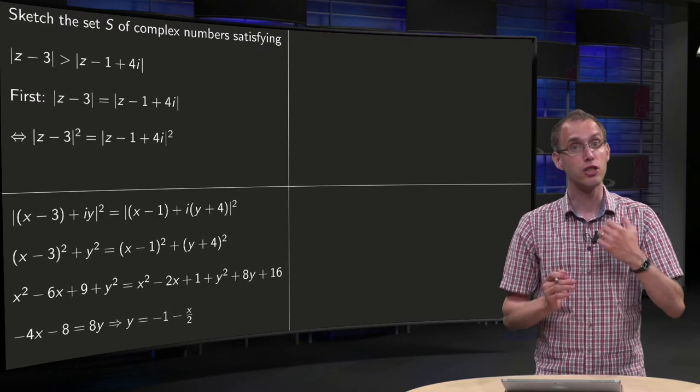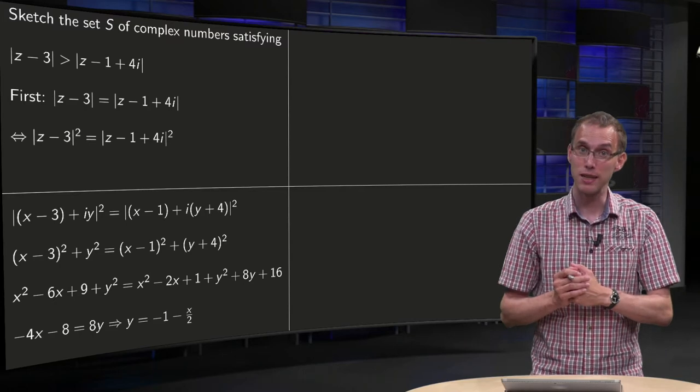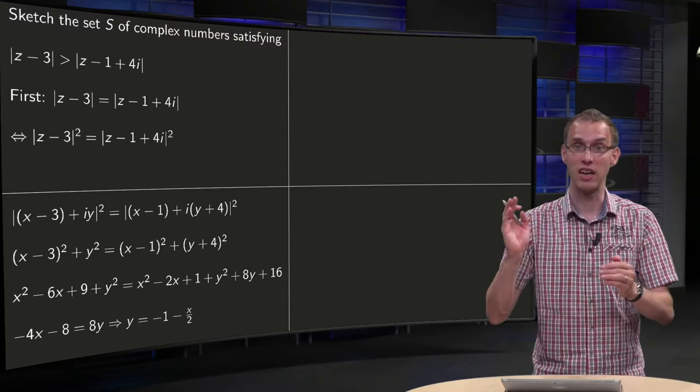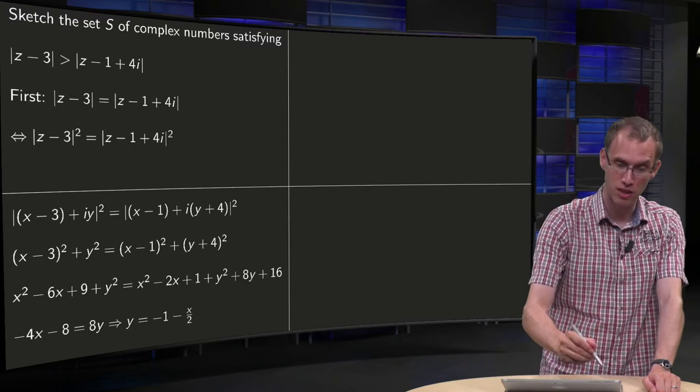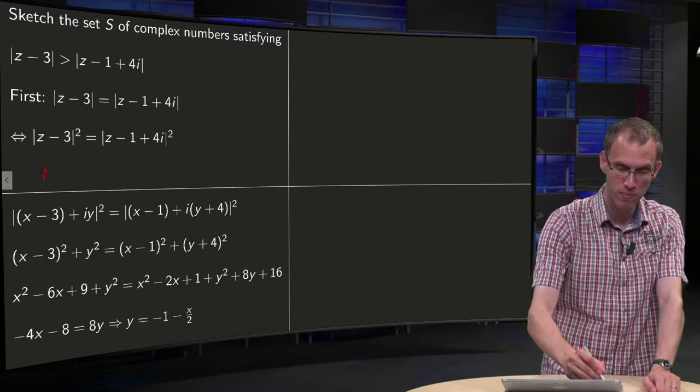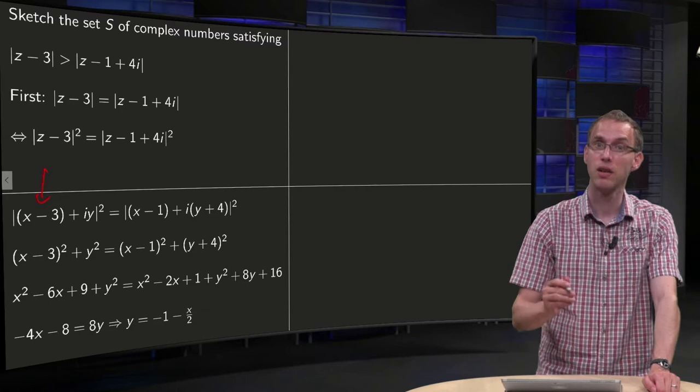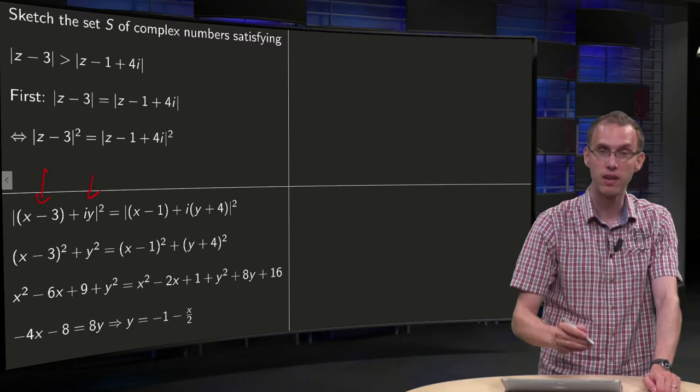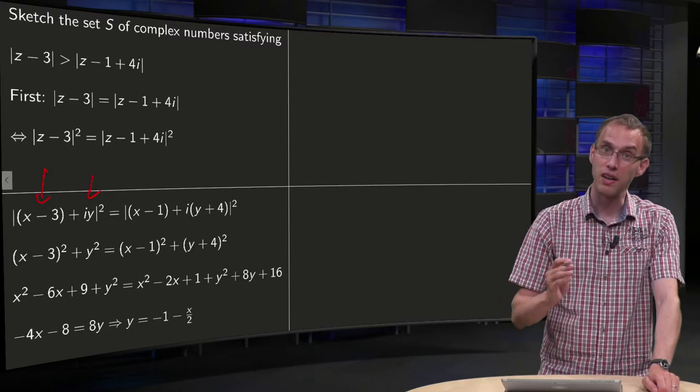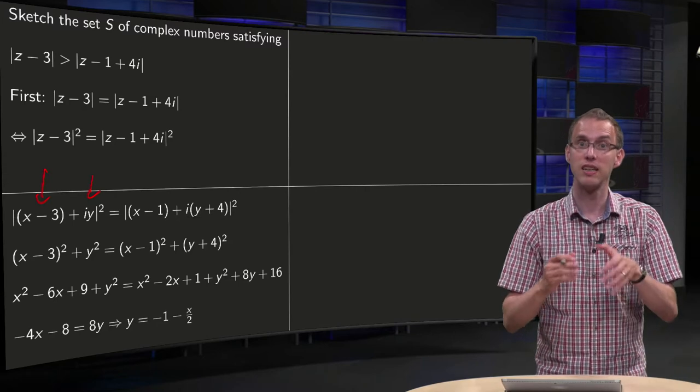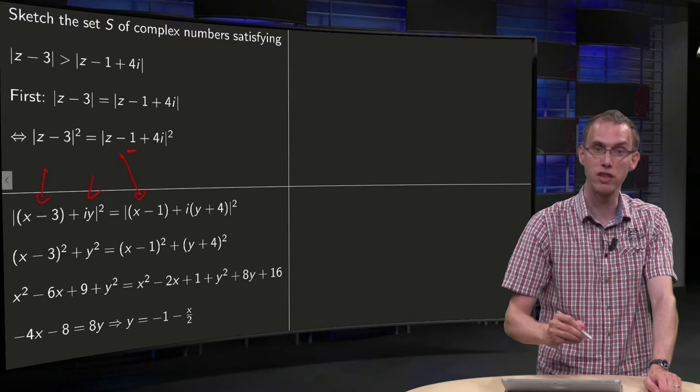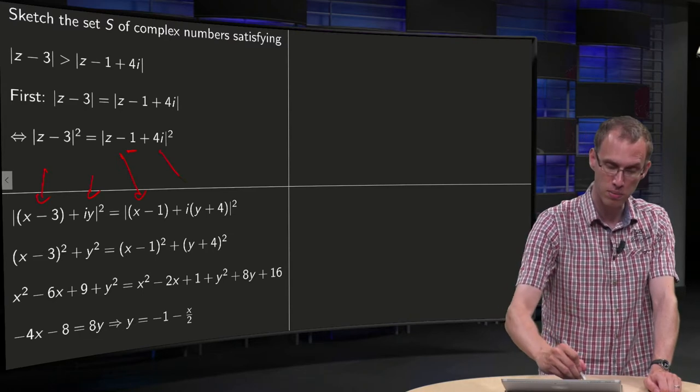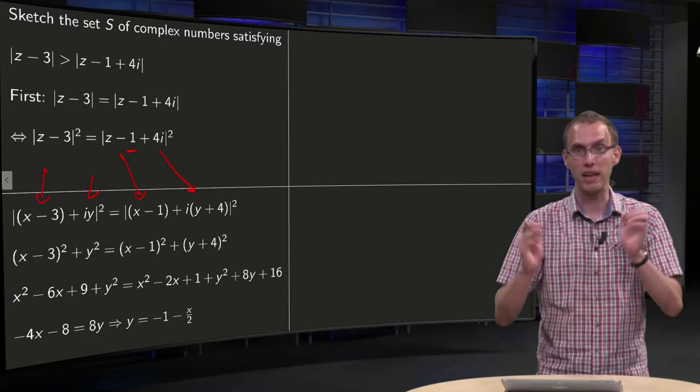Next step, substitute z equals x plus iy on the left hand side and on the right hand side. On the left hand side you get (x - 3) + iy in norm squared. On the right hand side you get (x - 1) + i(y + 4) in norm squared.